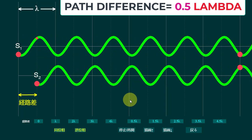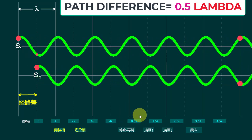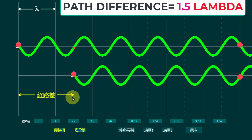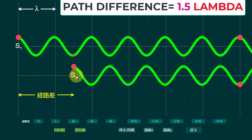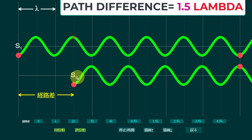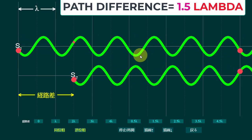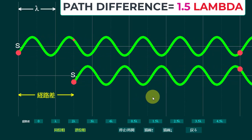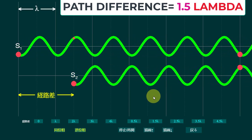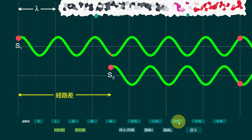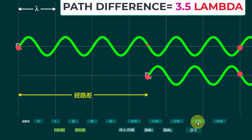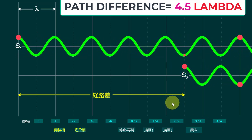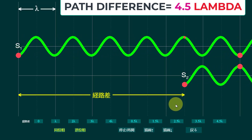So the first thing to remember: if two waves are at a path difference of 0.5 lambda, the interference will be destructive. Now if I bring them to a distance of 1.5 wavelength, again you can see that S1 and S2 are at a distance of 1.5 wavelength, and the crest is still facing the trough and the trough is facing the crest — the interference is still destructive. So whenever two waves are at a path difference of 0.5 lambda, 1.5 lambda, 2.5 lambda, 3.5 lambda, or 4.5 lambda, the interference will always remain destructive.